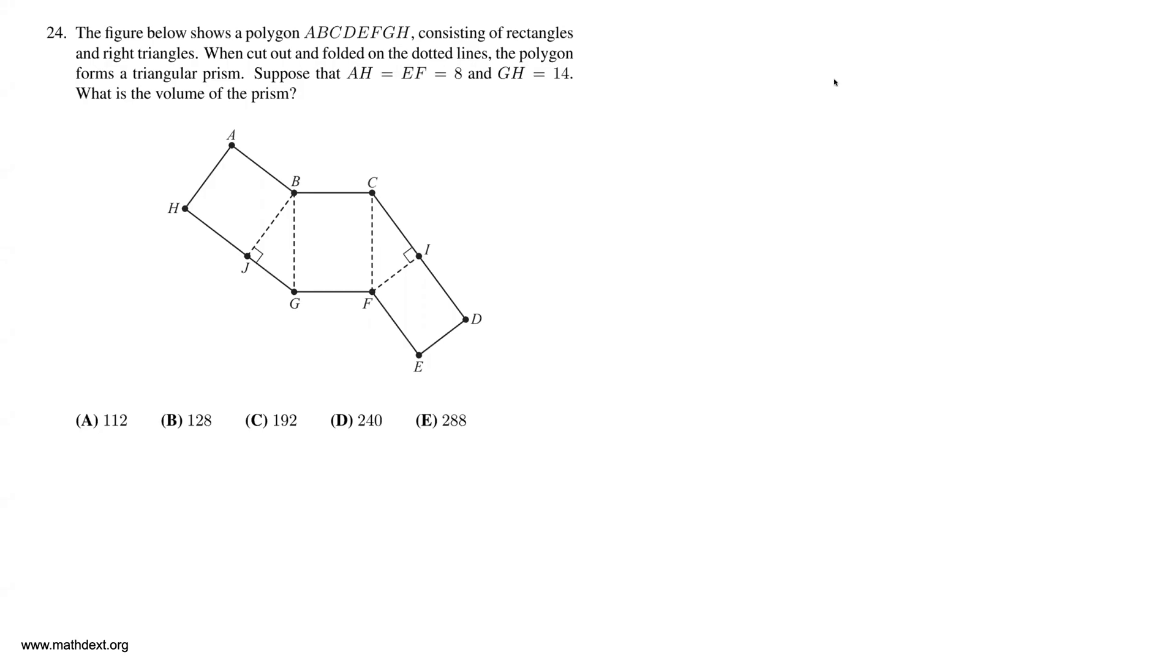The figure below shows a polygon ABCDEFGH consisting of rectangles and right triangles. When cut out and folded along the dotted lines, the polygon forms a triangular prism. Suppose that AH equals EF equals 8 and GH equals 14. What is the volume of the prism?